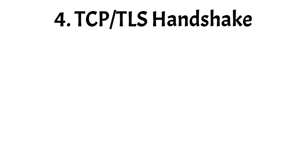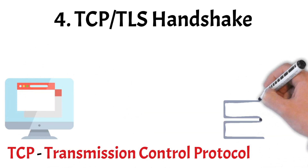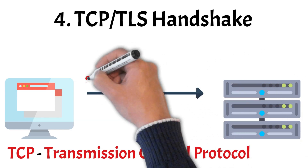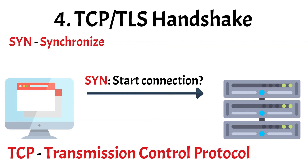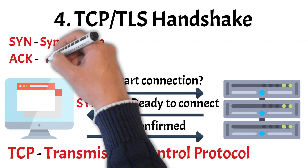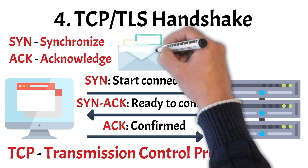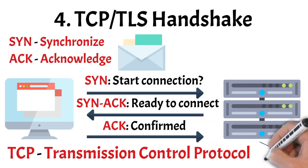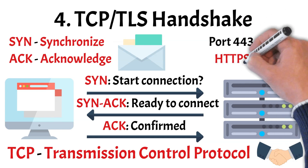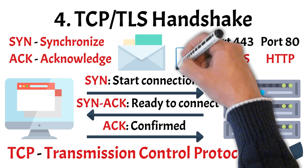Once the browser has the server's IP address, it begins setting up a connection using TCP, or the Transmission Control Protocol. This step is all about making sure both sides are ready to communicate reliably. It starts with a message from the browser to the server labeled SYN, short for Synchronize, which basically means 'I'd like to start a connection.' The server responds with SYN-ACK, saying it's ready. Finally, the browser replies with ACK, short for Acknowledge, meaning confirmed. This three-way exchange forms the TCP handshake. TCP also uses port numbers to make sure the request reaches the correct application on the server — for example, port 443 for secure HTTPS traffic and port 80 for regular HTTP.